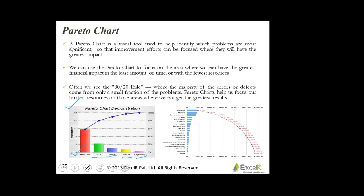The Pareto chart often uses the 80-20 rule: 80% of the problems occur because of 20% of the causes. So my hard disk and PCB both put together probably account for 80% of the problems. So if I address these two issues, I'll address 80% of the problems.